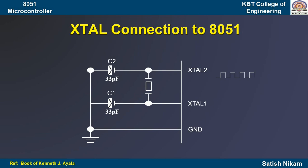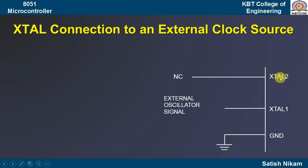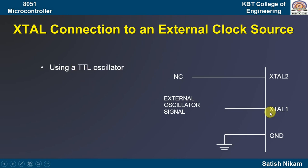The second option, shown in the figure from the book by Mazidi, is using a function generator or oscillator signal. If you have a function generator available, you can generate the required frequency in the lab and apply it to pin number 19, which is XTAL1. Another option is using a transistor-transistor logic (TTL) oscillator circuit — externally designed to generate the required frequency, which is then applied on pin number 19. In this case, the XTAL2 pin is left unconnected.